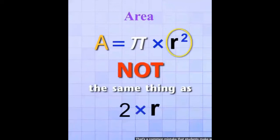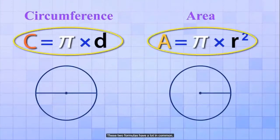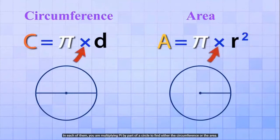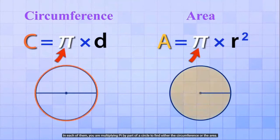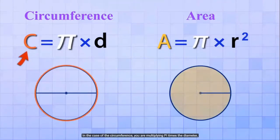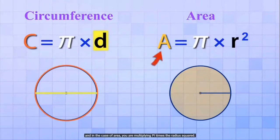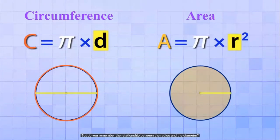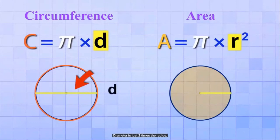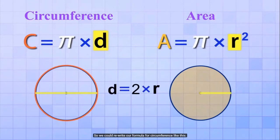If we look carefully at both formulas, you'll see they have a lot in common. In each one, you're multiplying pi by part of a circle to find either the circumference or the area. In the case of circumference, you're multiplying pi times the diameter, and for area, you're multiplying pi times the radius squared. Remember, diameter is just two times the radius, so we could rewrite the circumference formula as: circumference equals pi times 2 times R.